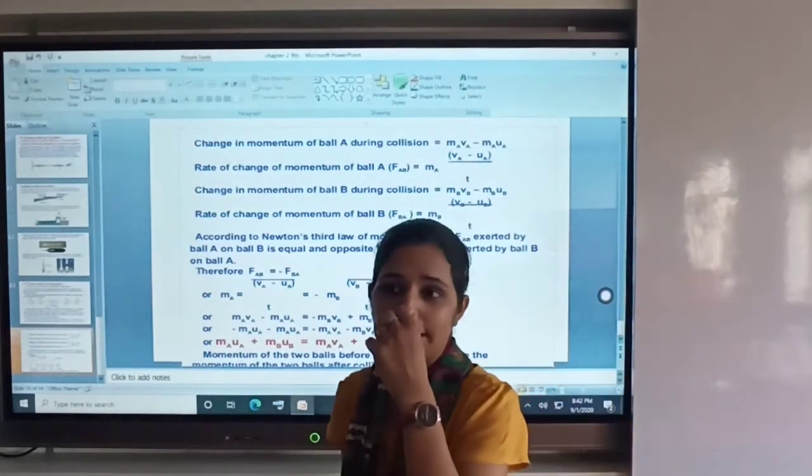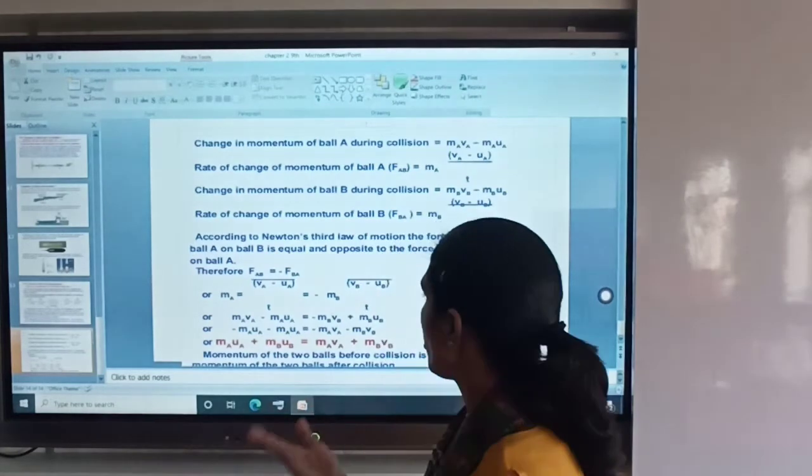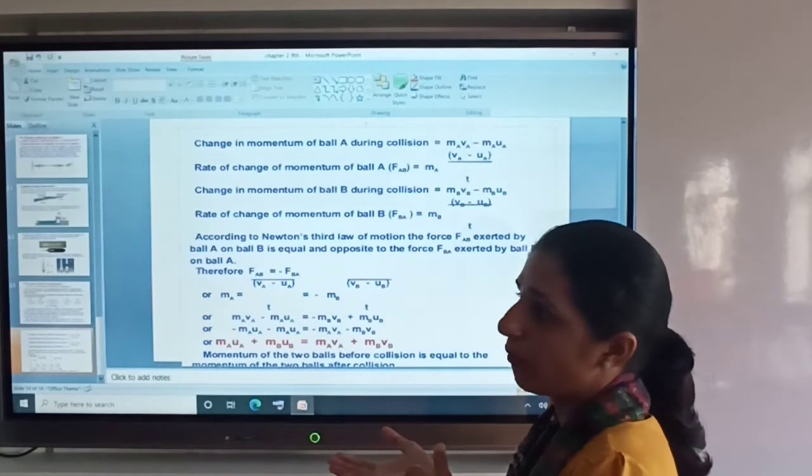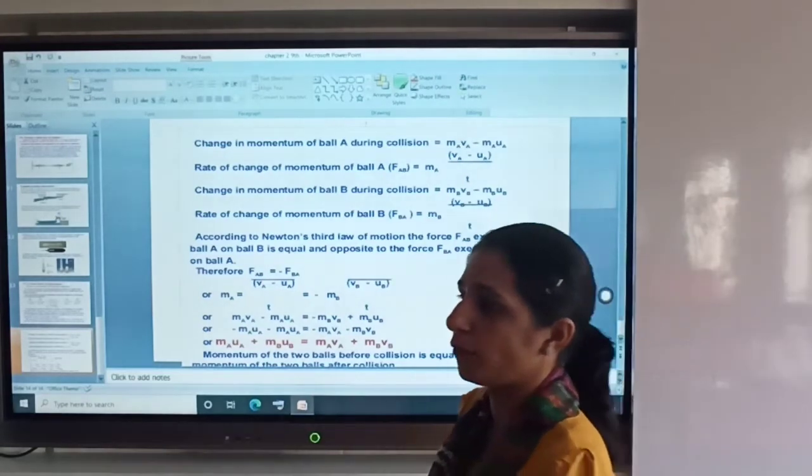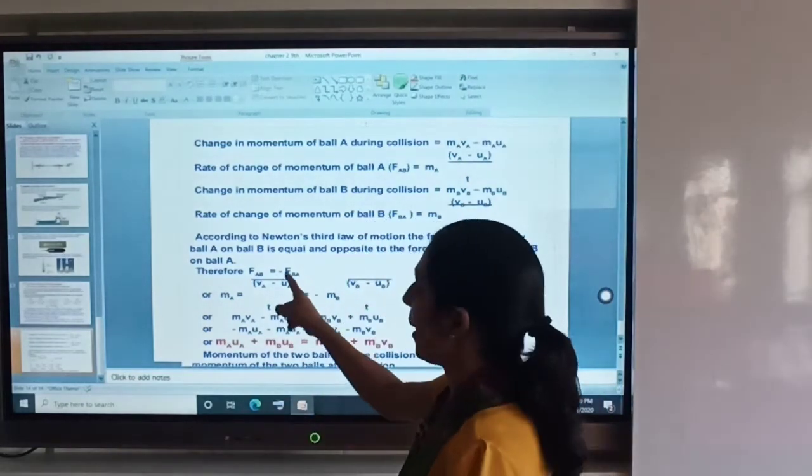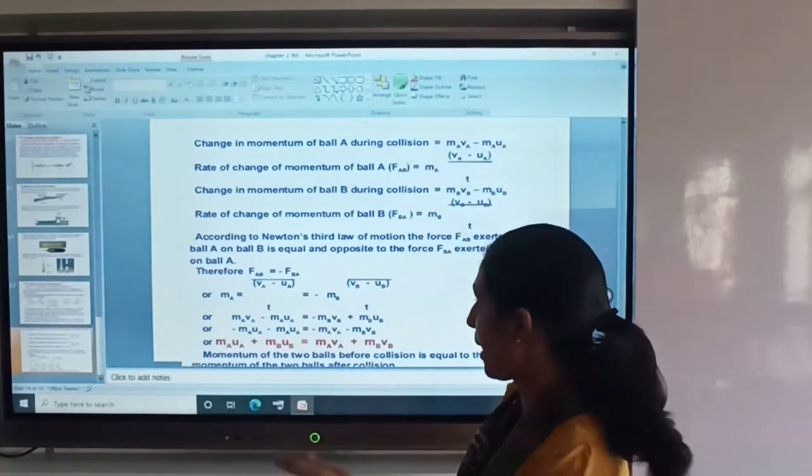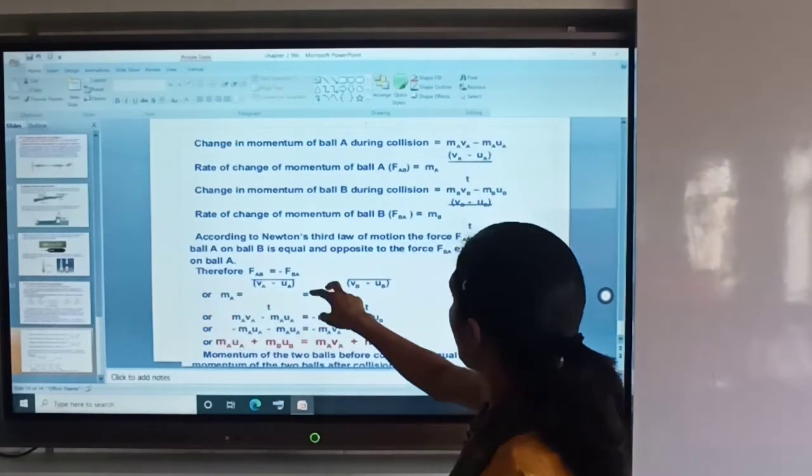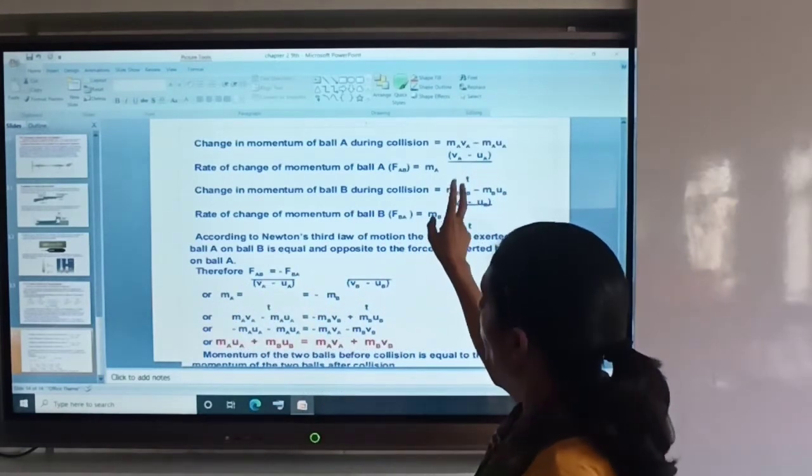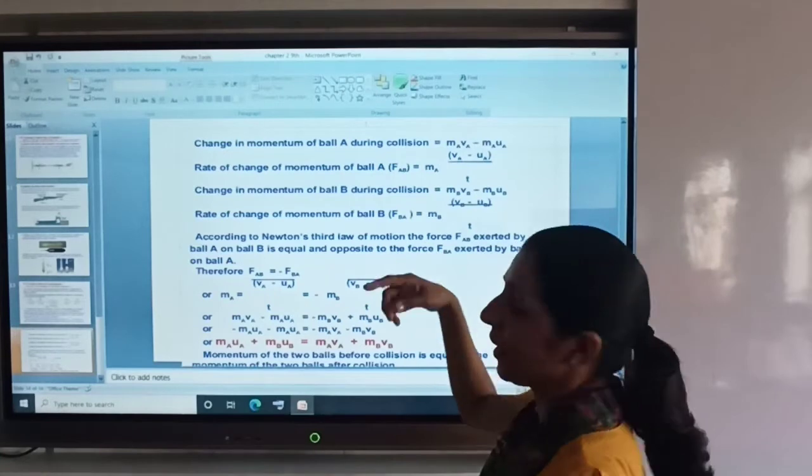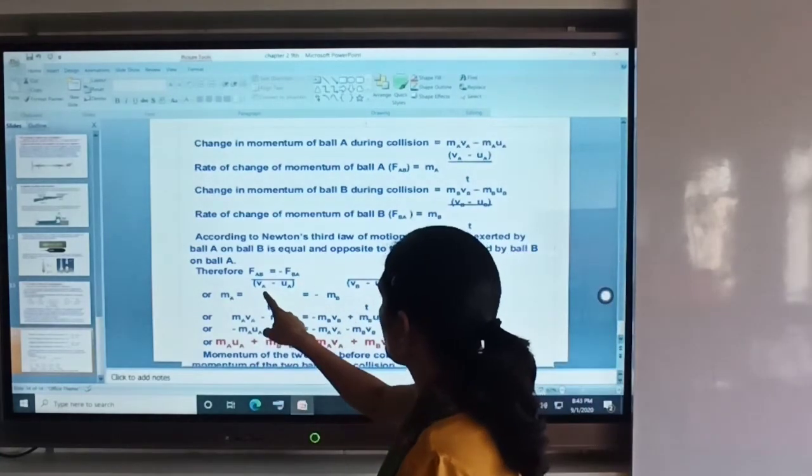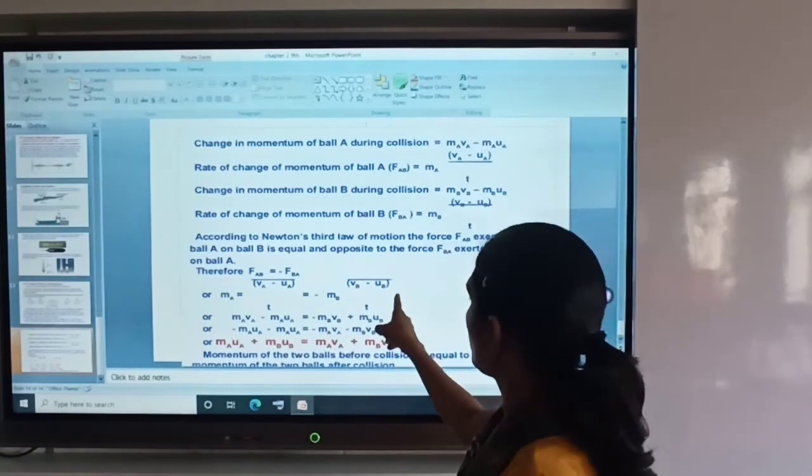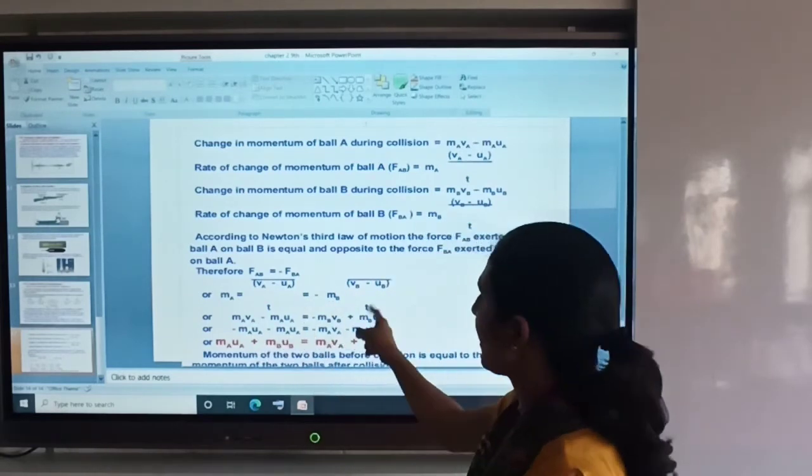Now Newton's third law says that force, action and reaction are always equal and opposite. F1 is equal to minus F2. Minus indicates that the direction is opposite. F_AB is equal to minus F_BA. So M_A(V_A - U_A)/T is equal to minus M_B(V_B - U_B)/T. T cancels out.